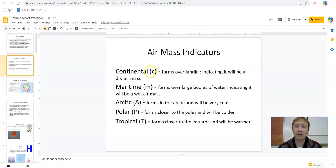So continental, the indicator is a lowercase c. Since it's continental, we know it forms over land. And since it forms over land, it tends to be a dry air mass because there's no moisture for it to pull up from the large body of water. So a lowercase c indicates that it's a dry air mass because it forms over land.